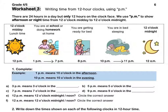Worksheet 4. There are 24 hours in a day but only 12 hours on the clock face. We use PM to show afternoon or night times from 12 o'clock midday to 12 o'clock midnight. At 12 PM it is midday and you are having lunch. From 1 PM to 7 PM you are at school or doing homework at home. At 8 PM it is now dark and you are getting ready for bed. From 10 PM to 11 PM you are sleeping in bed. At 12 AM you are still sleeping in bed — it is midnight but it is AM because the new day has started.